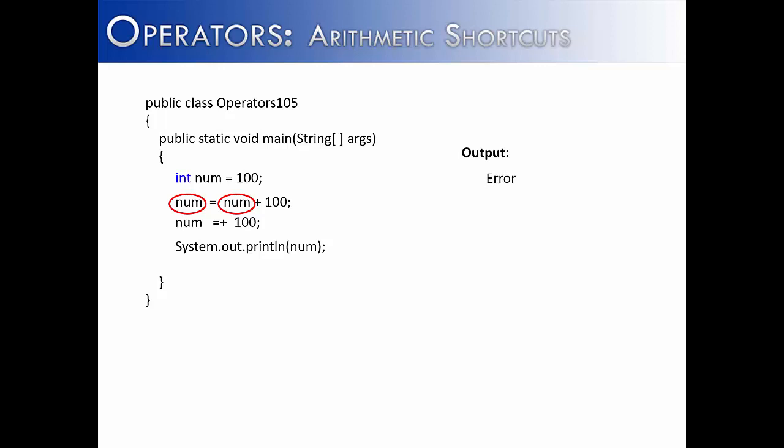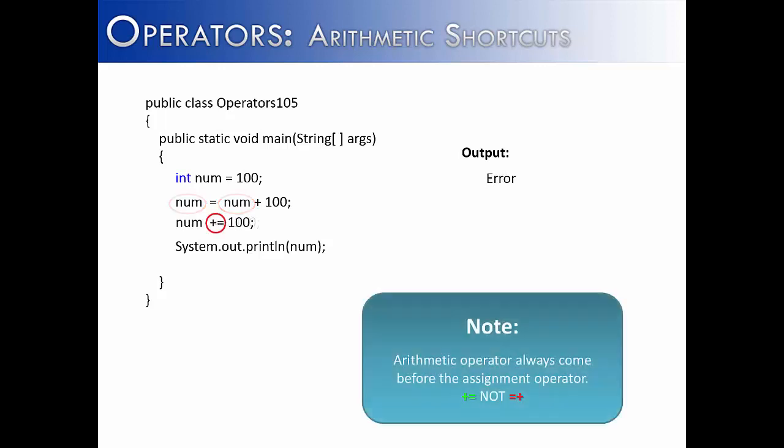It's important to note with arithmetic shortcuts that the operator is always going to come before the assignment operator. It should read plus equals, not equals plus. And so if we were to run this program right now, we would get the value 300.